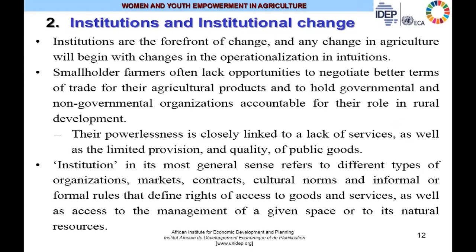Institutions are at the forefront of change, and any change in agriculture will begin with changes in the operationalization of institutions. Smallholder farmers often lack opportunities to negotiate better terms of trade for their agricultural products and to hold governmental and non-governmental organizations accountable for rural development. Their powerlessness is closely linked to a lack of services and limited provision of public goods. An institution, in its most general sense, refers to different types of organizations, markets, contracts, cultural norms, and informal or formal rules that define rights of access to goods, services, and natural resources.